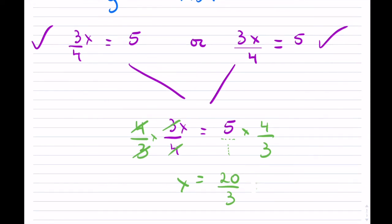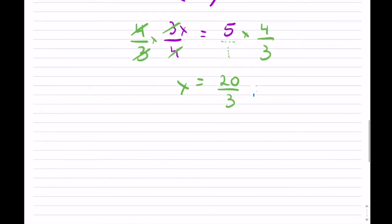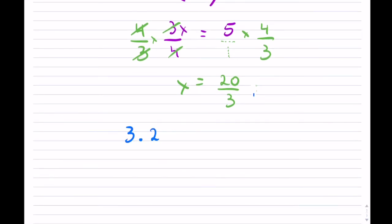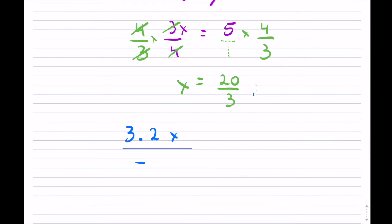That's the last thing that can happen: you can have numerators and denominators, and they can be positive or negative. Treat the positive or negative just as you did in these examples. Here is the final one where it can get a little annoying — what if you have decimals that you're dealing with, and they are negative? Something like negative 3.2x over negative 2.8 equals 5.1. This can happen in real life when you're solving equations.